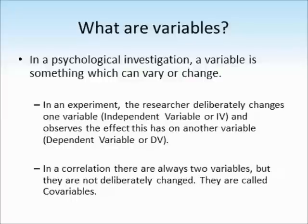In a correlation, there are still always two variables, but they're not deliberately changed. They're called co-variables. It's really, really important in an exam — never write IV and DV in relation to a correlational study. We'll talk a bit more about why later.